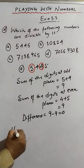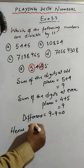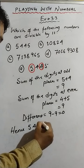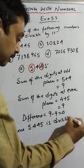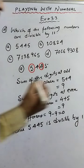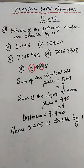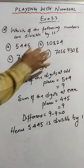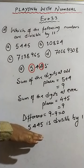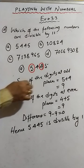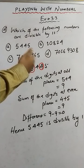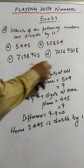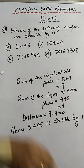So this is the solution of sum number A. For each sum we will maintain the same method. I am just going to change the numbers. Now we will do number B.